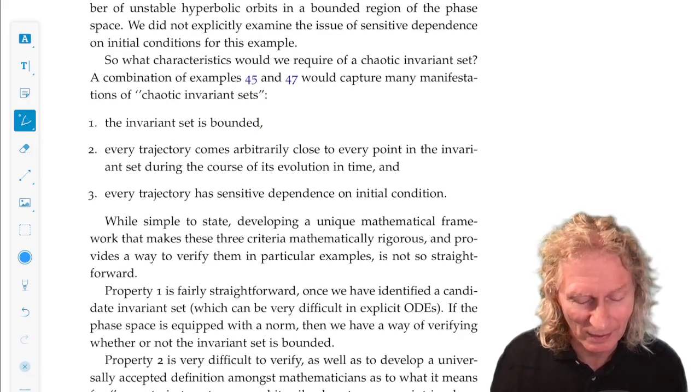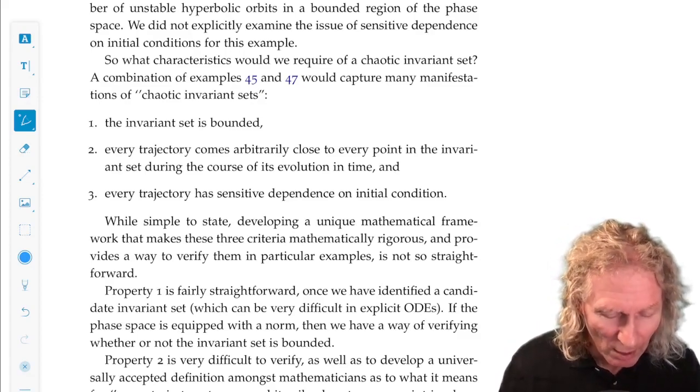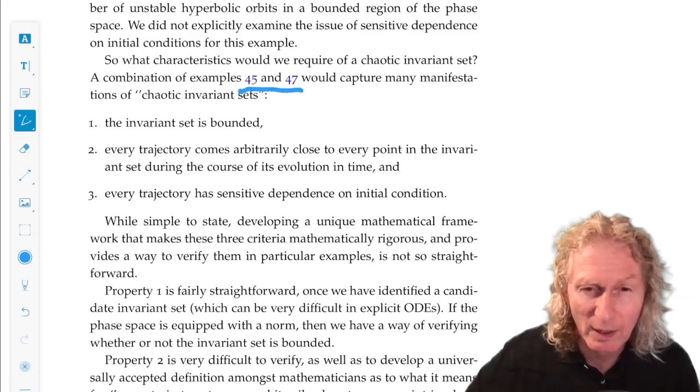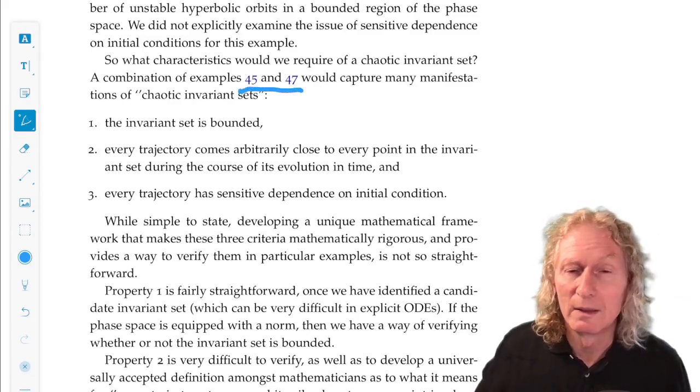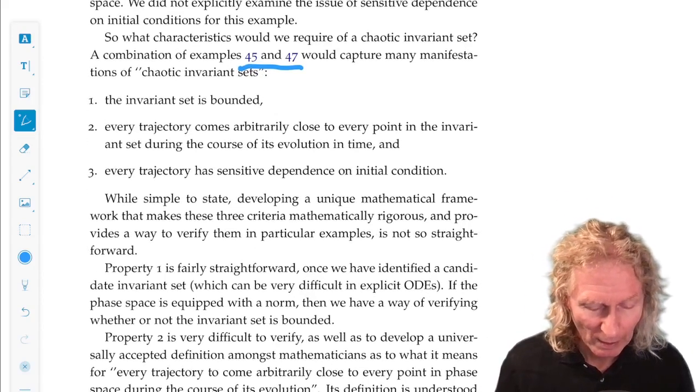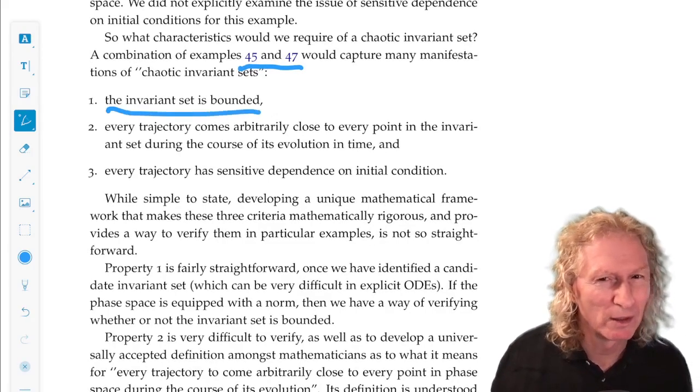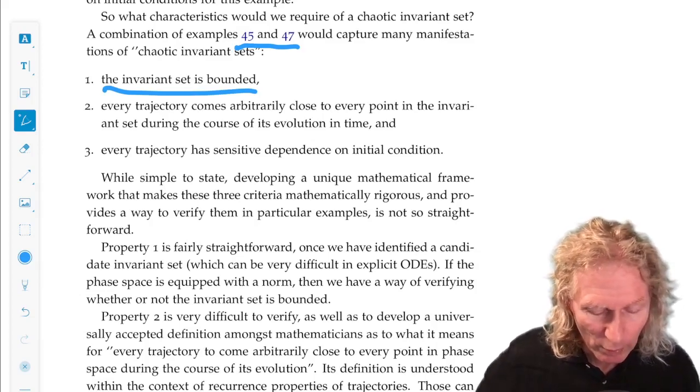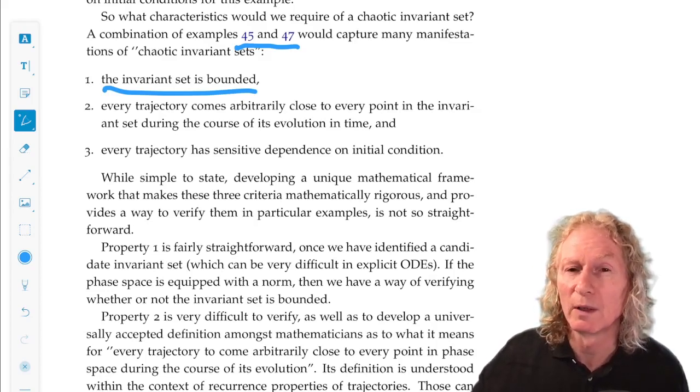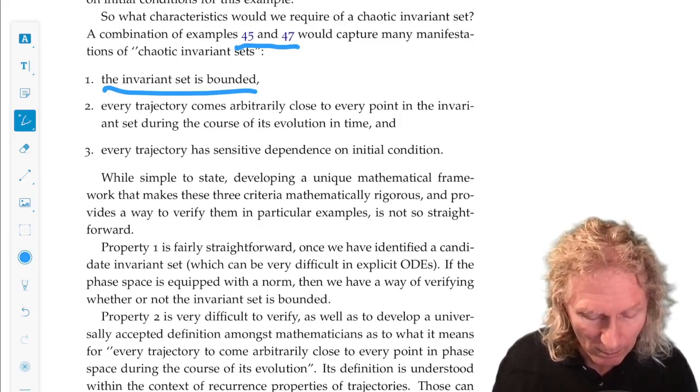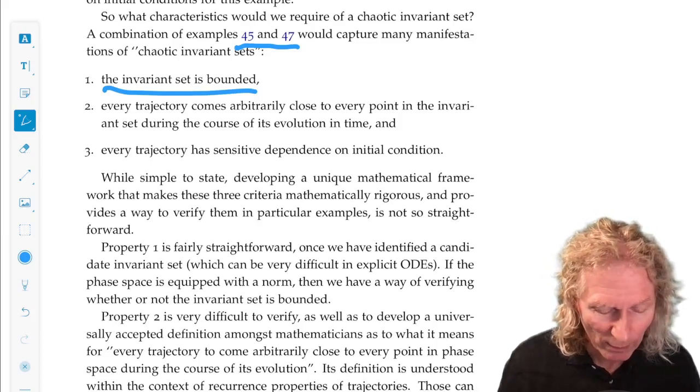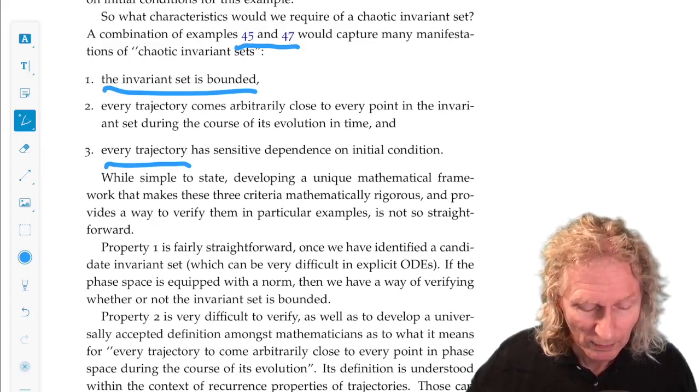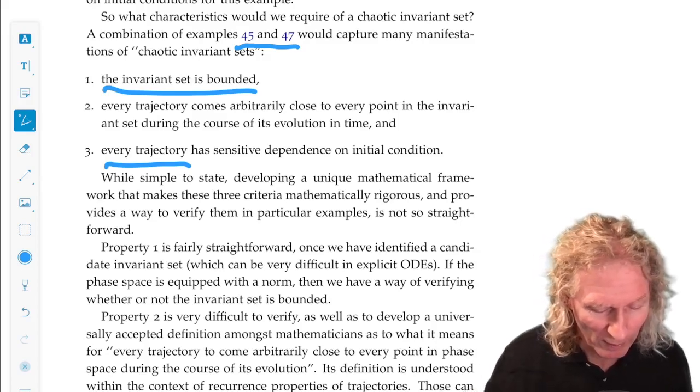We didn't do anything in this course, any examples that truly would satisfy chaotic, but what would be the official definition for chaotic invariant set? It's going to be a combination of examples 45, the saddle, and 47, densely filling out the torus. Bounded invariant set. So we want the invariant set to be bounded. That's something we can probably verify in a particular example. We want every trajectory to come arbitrarily close to every point in the invariant set. That's example 47. And then we want every trajectory to have sensitive dependence on initial conditions. That's not 47. It's 45, but 45 doesn't satisfy property 1 and 2.